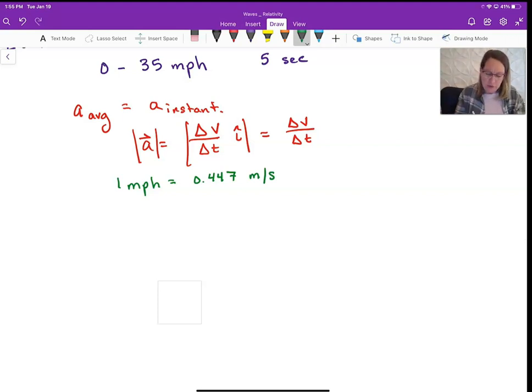And then you can say, to do the conversion, if I want my V in meters per second, and those are the units we want to generally use in physics, it's MKS units. So we'll say 35 miles per hour.